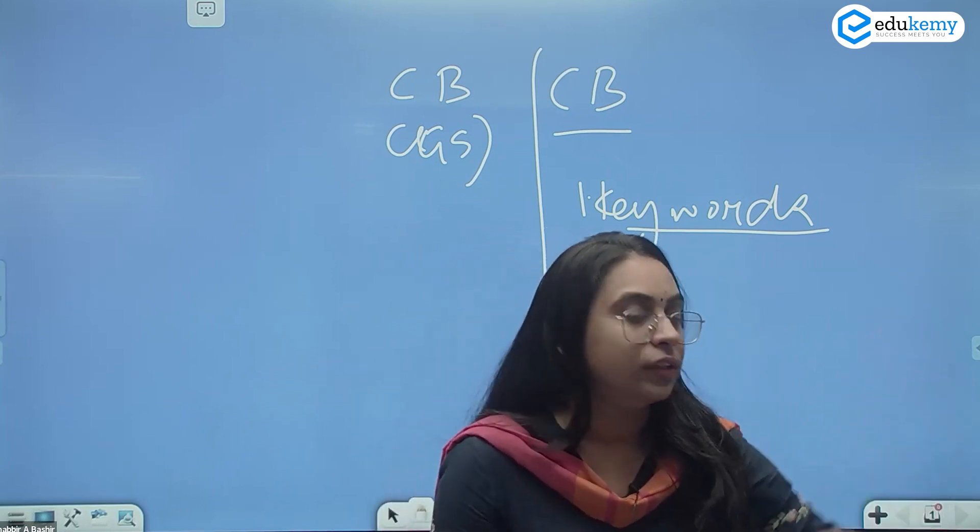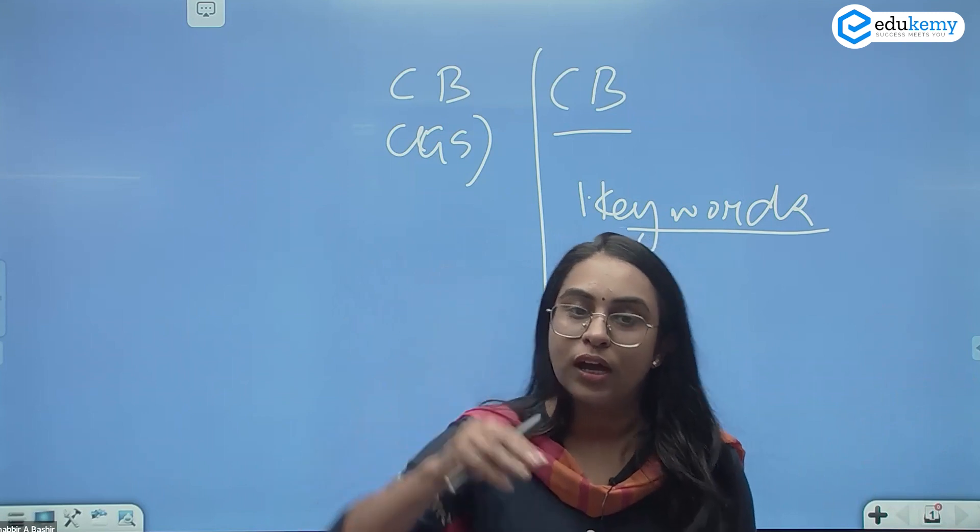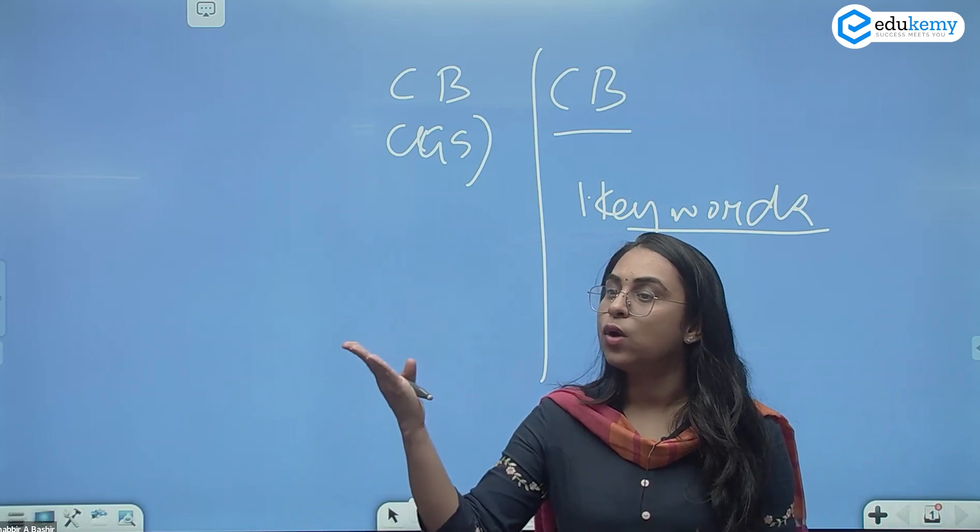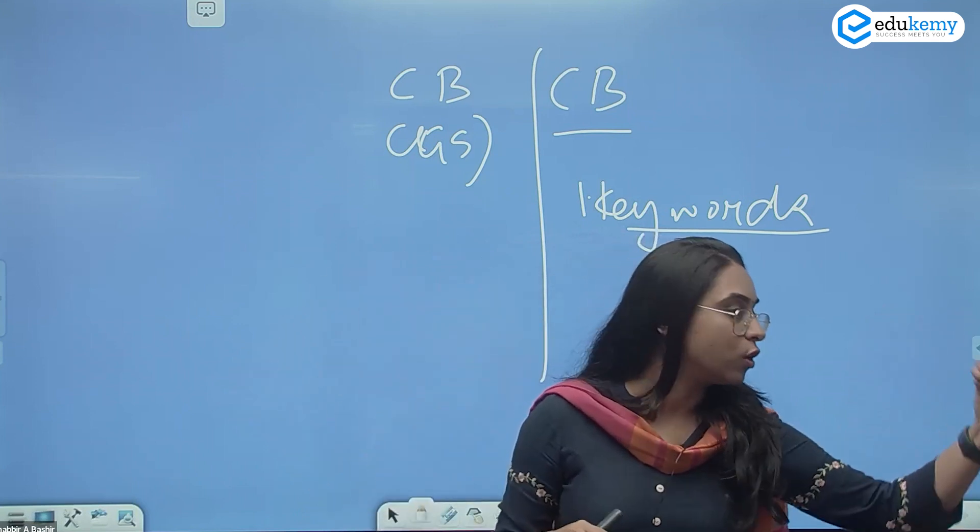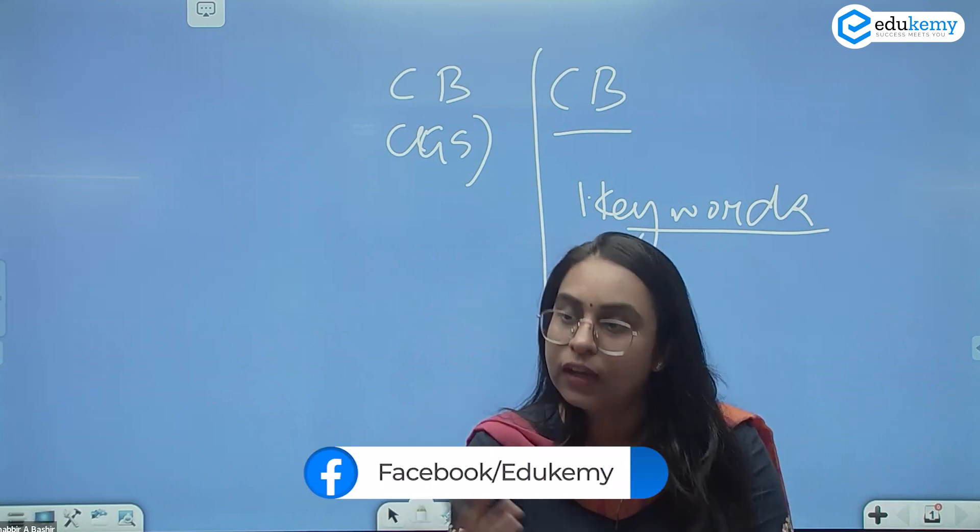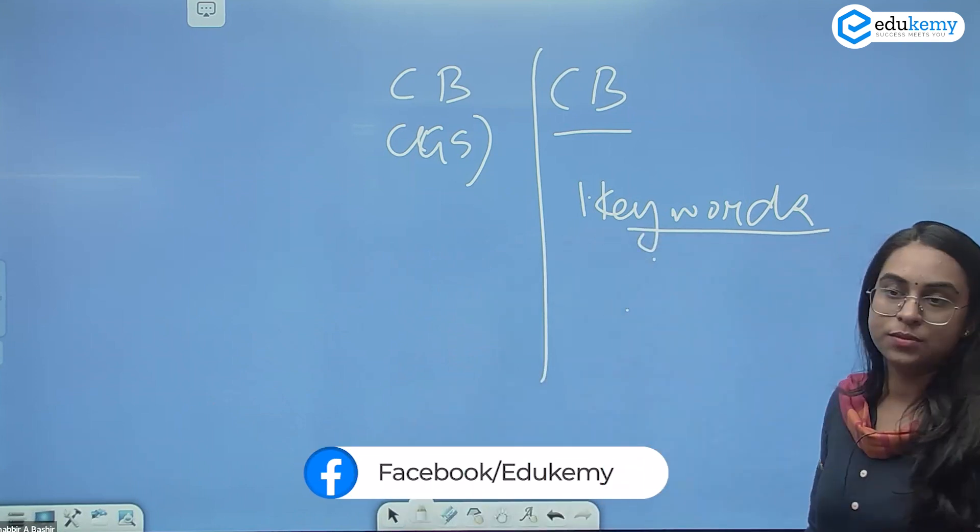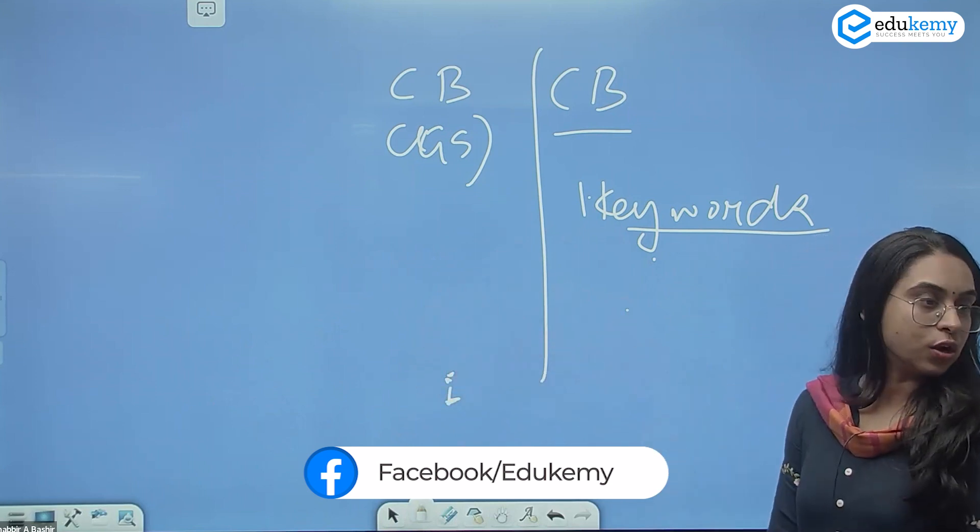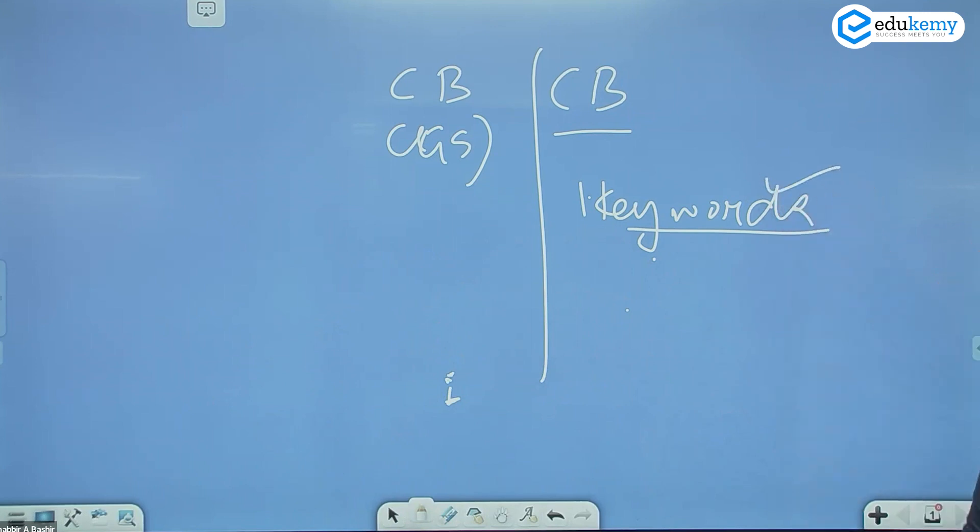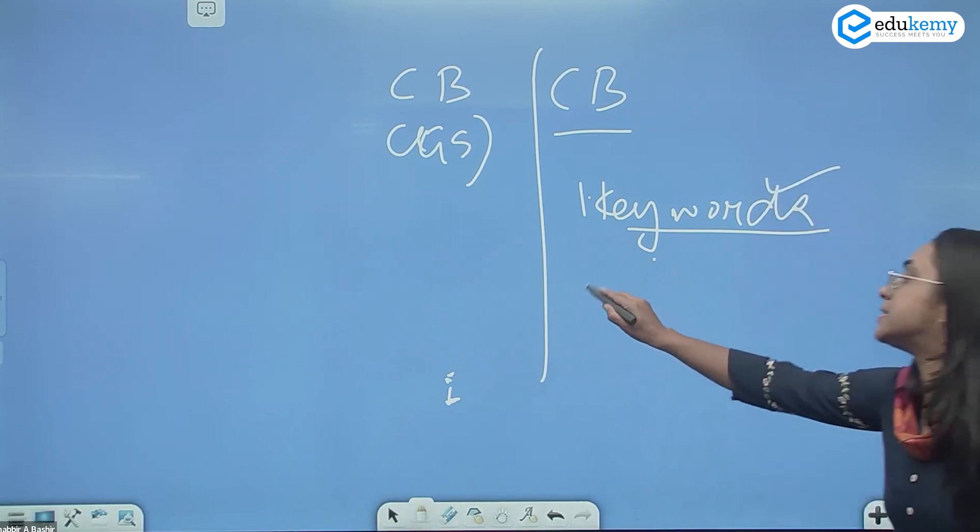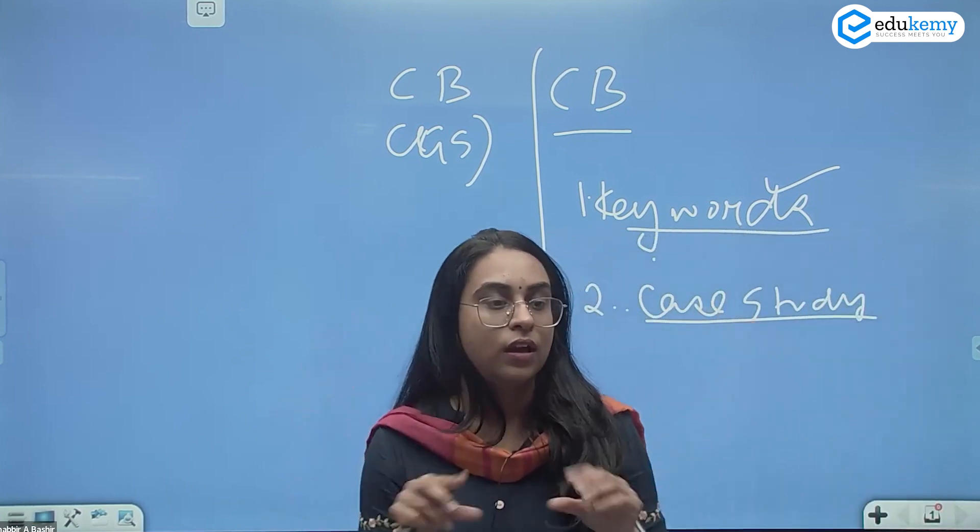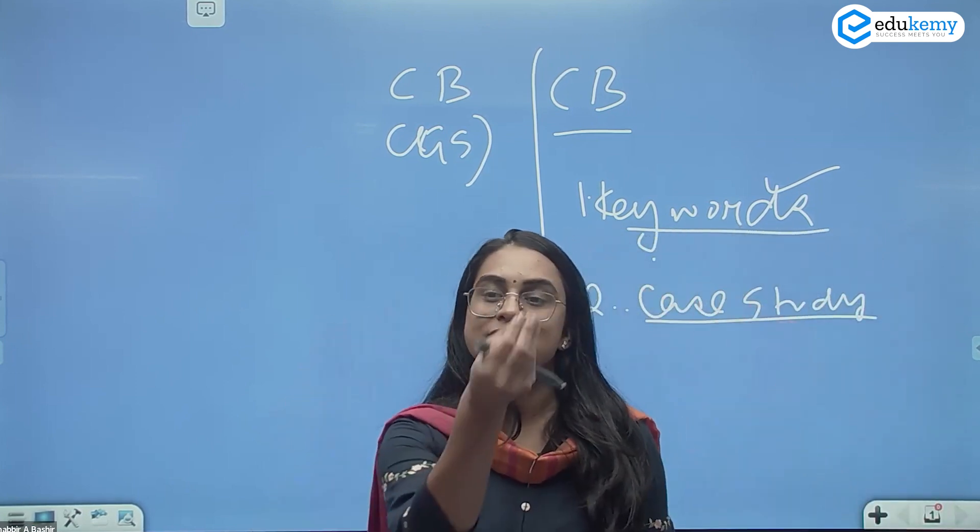This is a debate. You cannot write this in your GS answers, but subtle use of terms like techno-centric form of development, development beyond the carrying capacity, limits to growth - if your terms come in your answers in geography optional, that means it shows you are able to use the terms that you study across one place. So how do you make your answer geographical? One is you use the key terms. Now the second is your case study.